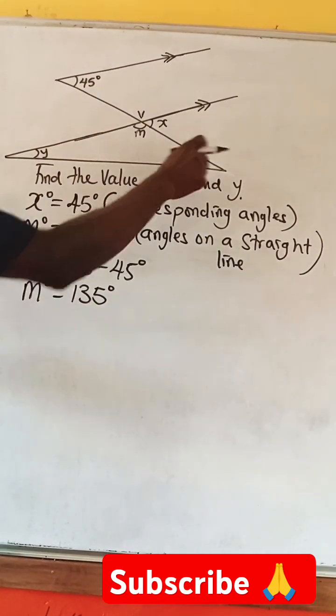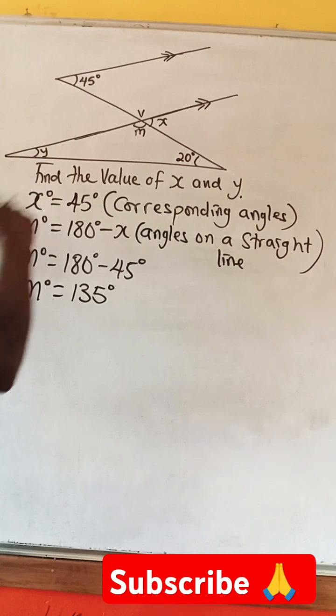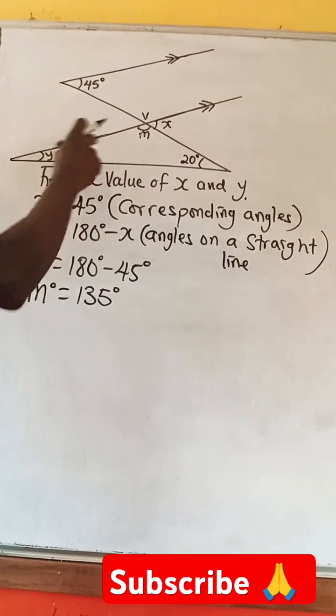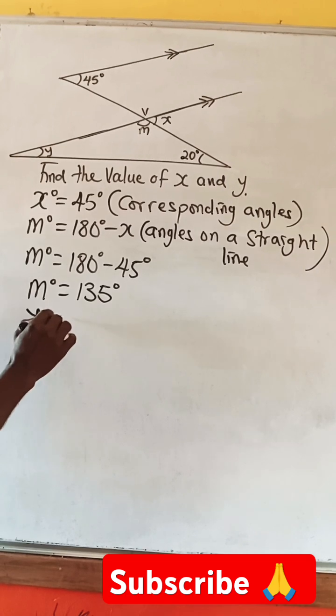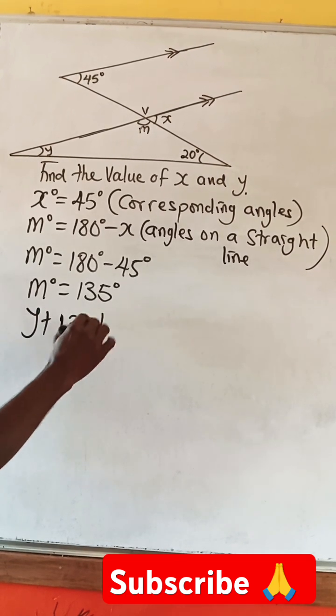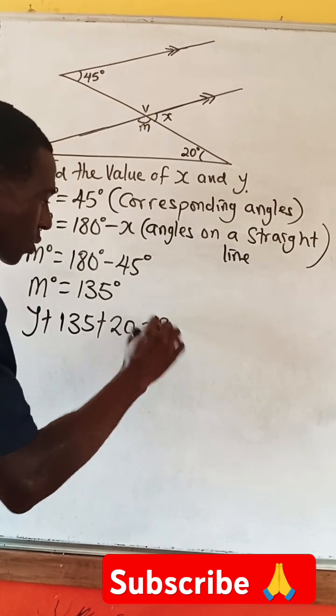So, now that we have M, we have 20 here, then Y. So, we can use the sum of angles in a triangle. So, Y plus 135, which is M, plus 20 equals 180.